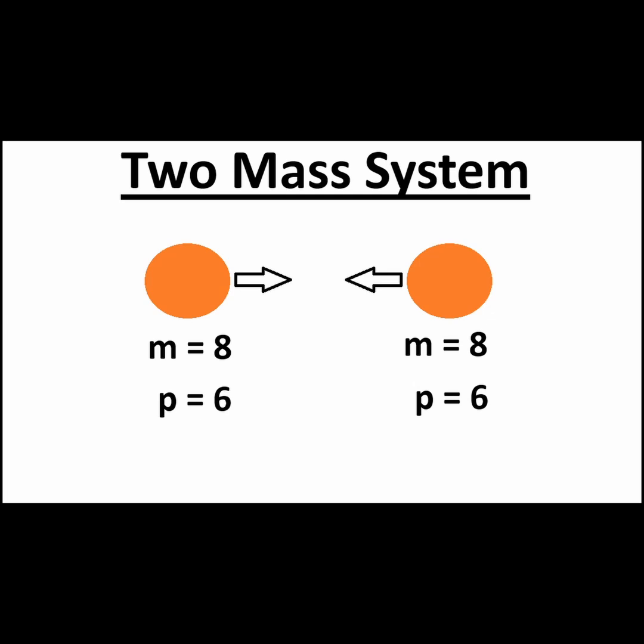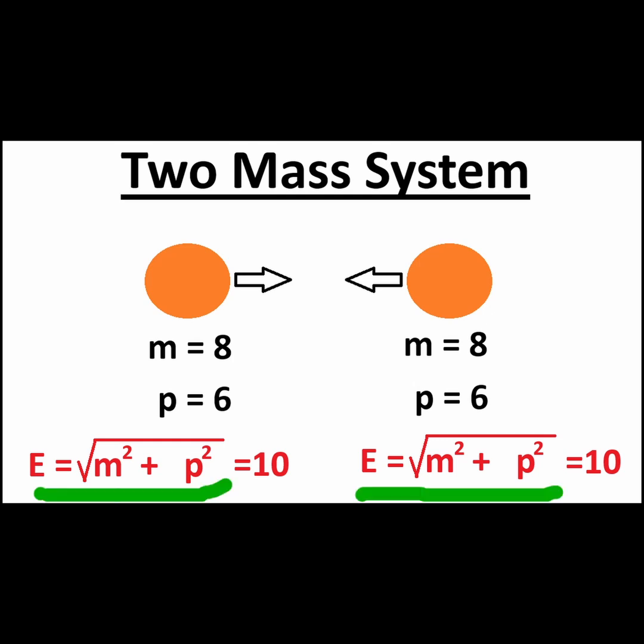Each object has a mass of eight units. The energy of each object is the square root of their mass squared plus their momentum squared, which is equal to 10.